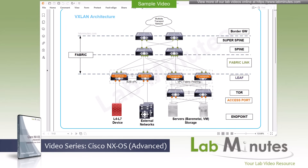Cisco data center technologies have gone through quite a bit of evolution in the past two decades. Traditional data center networks used to be based on the three-tier architecture with the core, distribution, and access layers. When you have redundant links between the tiers, you then need to deal with spanning tree blocking, which not only reduces network capacity but also causes slow convergence.